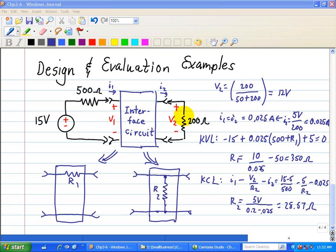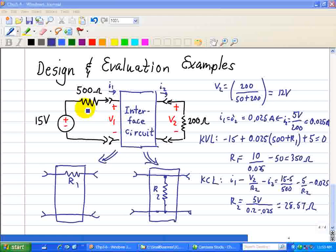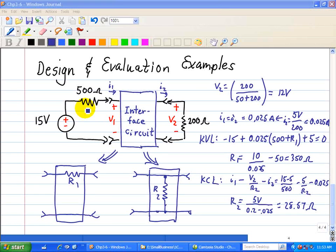In this case, power dissipation in the interface circuit is an important factor for two reasons. First, less interface dissipation means less power demand on the source. Second, less dissipation in the interface resistors means lower power ratings, which are generally less expensive.